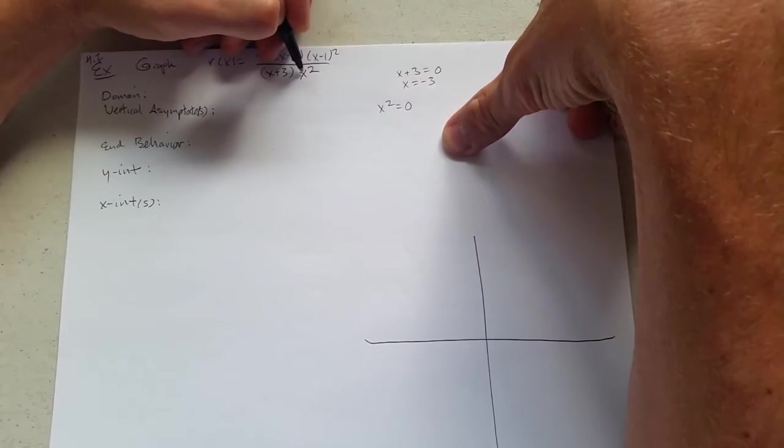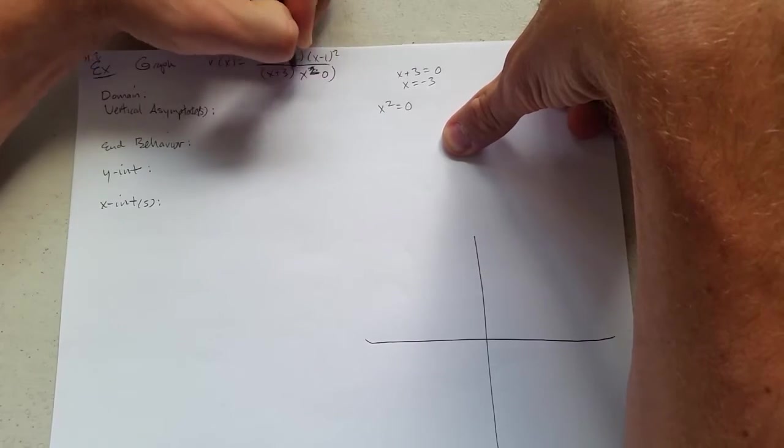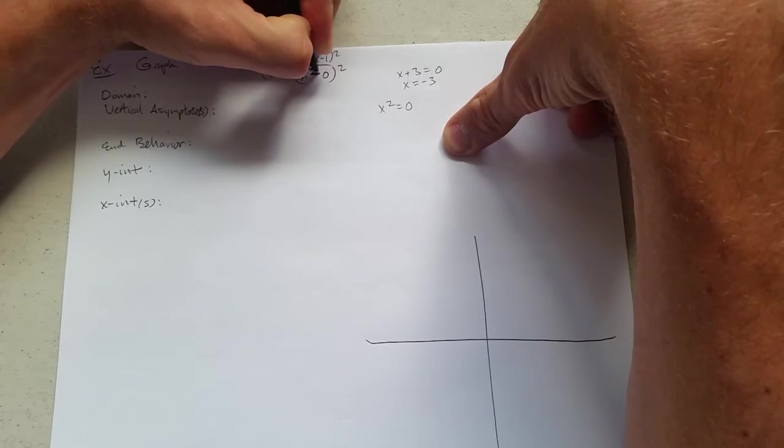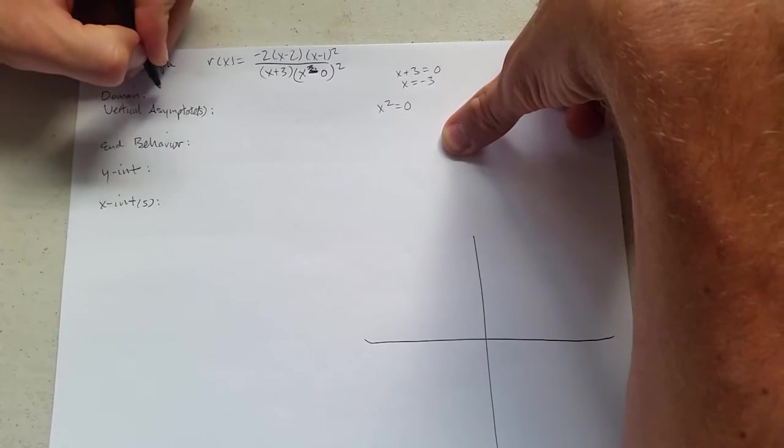You could rewrite x squared. You could write it as x minus 0, it's a little bit silly to do this, x minus 0 squared. And you could say, ah, x equals 0 makes that 0. So we're going to write,